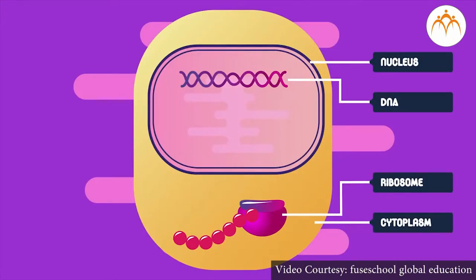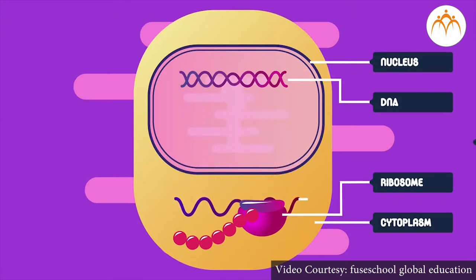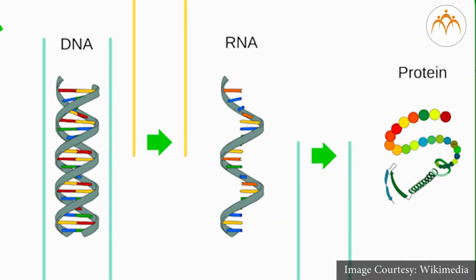Transcription and translation take the information in the DNA and use it to produce proteins. Transcription uses a strand of DNA as a template to build a molecule called RNA. The RNA molecule is the link between DNA and the production of proteins. During translation, the RNA molecule created in the transcription process delivers information from the DNA to the protein-building machines. DNA gives RNA; RNA gives protein.